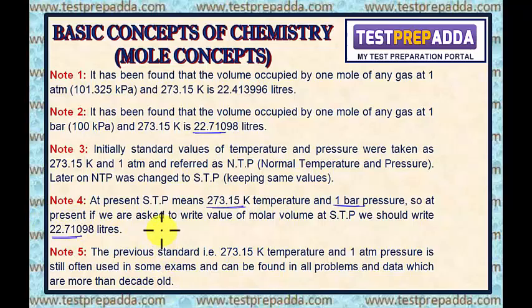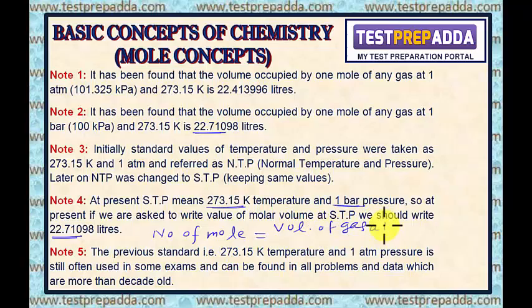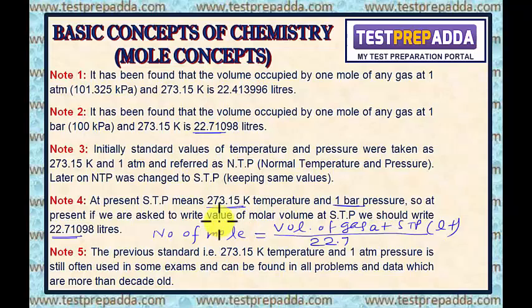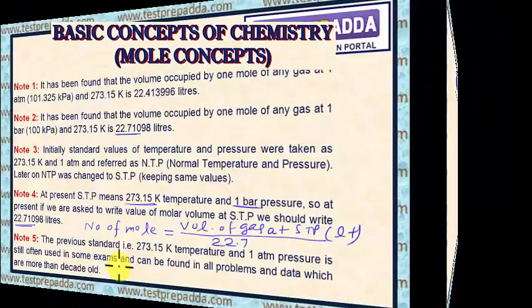This value can be used to find the number of moles of a gas. If the volume of a gas is given at STP (in liters), divide that volume by 22.7 to get the number of moles of the gas.